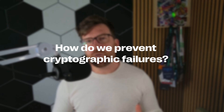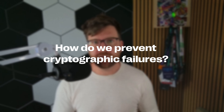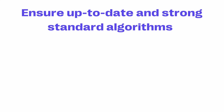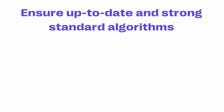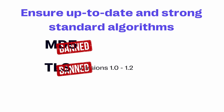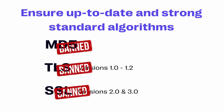So how do we ensure we don't have cryptographic failures? There are a number of things we can do, starting with making sure you're using the correct and updated versions of encryption algorithms. This means we never use something like MD5 to hash passwords, we don't use TLS 1.2 or lower, and we definitely don't use SSL 2.0 or SSL 3.0 — despite being very popular, these have pretty big vulnerabilities within them.